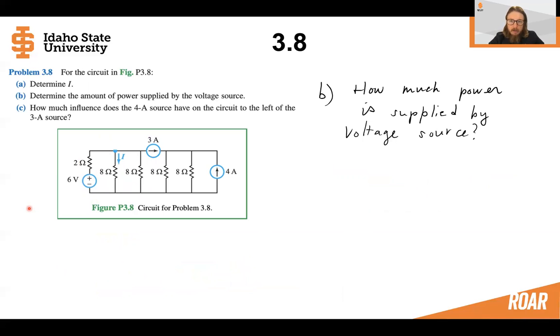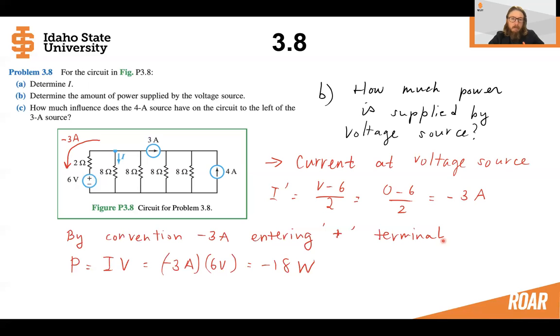Now, let's check how much power is supplied by the voltage source. So we should figure out how much current is in that branch. How can we do this? Well, we know now what the node voltage up here is. And we know this battery. So let's call this current that's going through this battery or voltage source I prime. So if we take the voltage minus the six volt battery down to the reference divided by this two ohm resistor and solve for the current I prime, we'll get minus three amps.